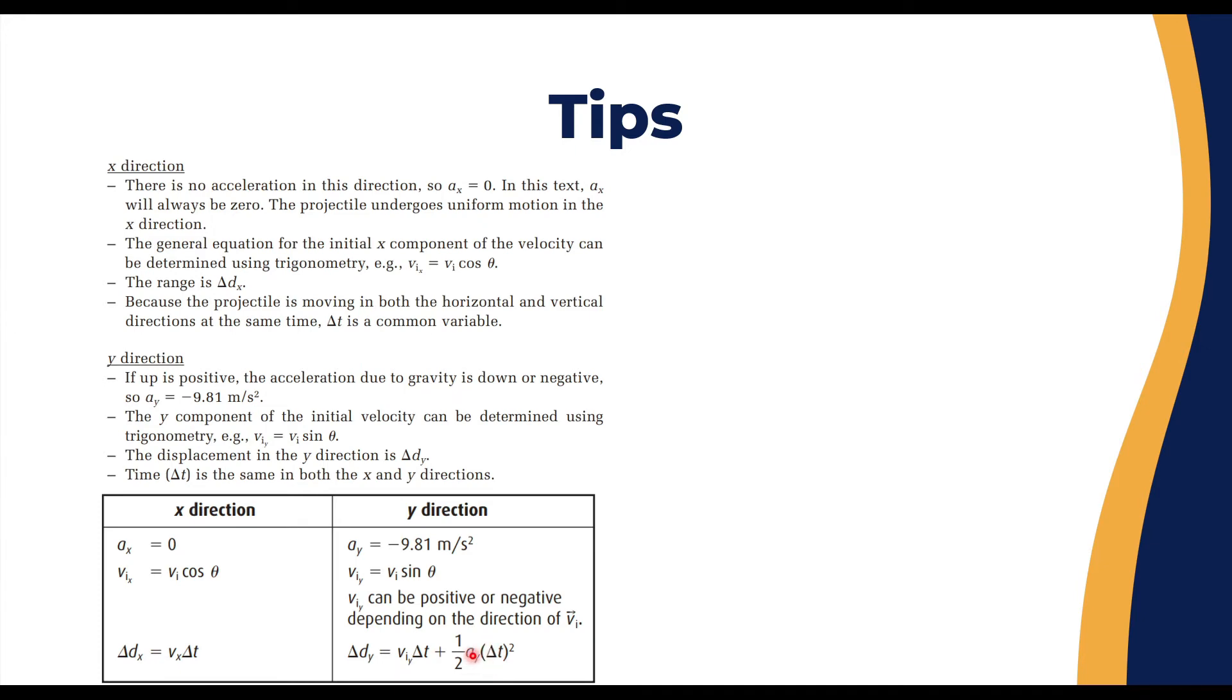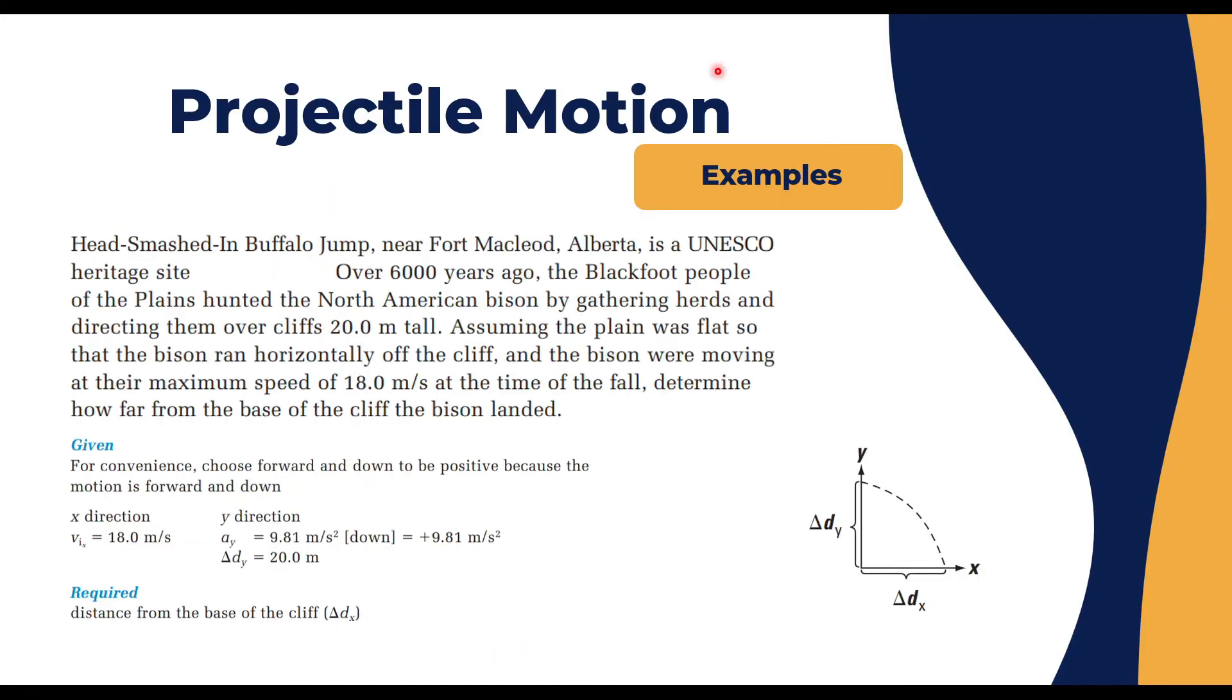Now let's take an example on horizontally launched projectile motion. The author here seems like he had the appetite to write a lot. We have a cliff—in short, the cliff has animals on its edge. The cliff is 20 meters tall. You assume the plane was flat so that the animals can run horizontally off the cliff. The animal, which is a bison in this case, was moving at a maximum speed of 18 m/s at the time of the fall. Determine how far from the base of the cliff the bison landed.